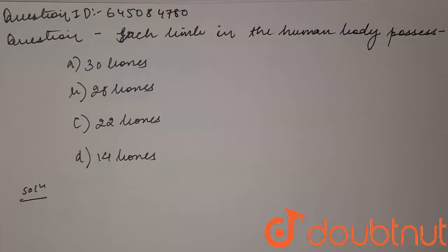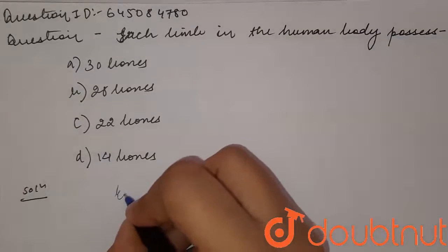Each limb in the human body possesses: A) 30 bones, B) 28 bones, C) 22 bones, and D) 14 bones. So, each arm and leg...